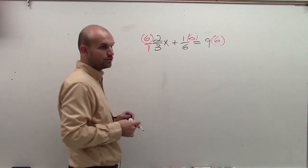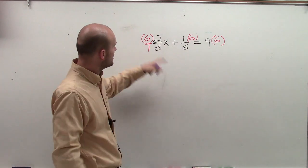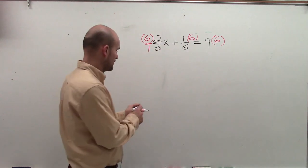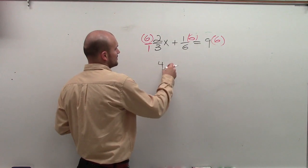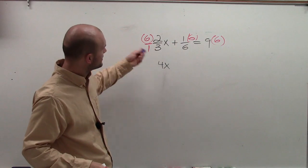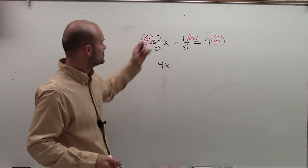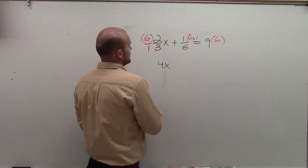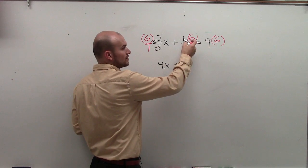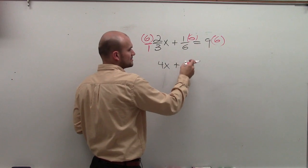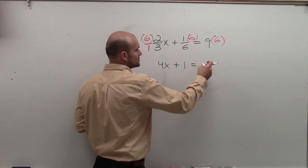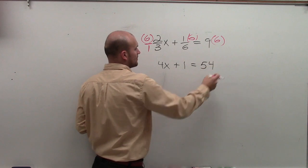You can change your whole number to a fraction and just multiply across. 6 times 2 is 12, 12 divided by 3 is 4x. You could also look at it as 6 divided by 3 is 2, and 2 times 2 is 4. So plus here I have 6 times 1/6, which is 6 divided by 6 equals 1. And 9 times 6 equals 54.